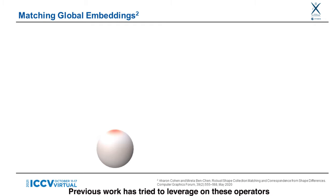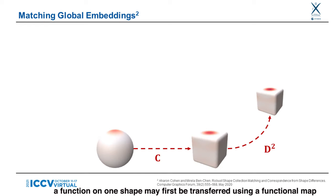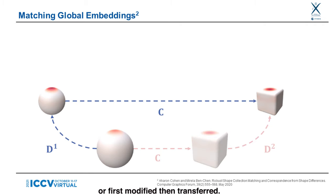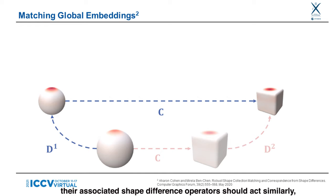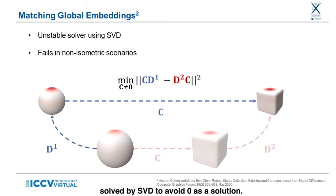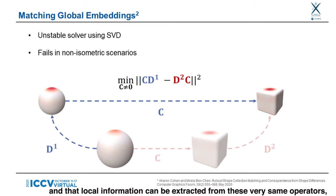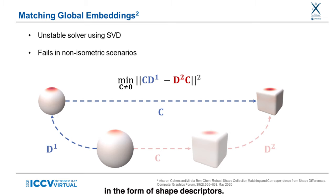Previous work has tried to leverage these operators in order to compute correspondences between surfaces undergoing similar deformations. The idea is as follows: a function on one shape may first be transferred using a functional map and then modified by a shape difference operator, or first modified and then transferred. Given that the two deformations are similar, the associated shape difference operators should act similarly, which leads to a system solved by SVD to avoid zero as a solution. In practice, this solver appears to be quite unstable and fails in the presence of partiality. We argue that using only global embeddings of the deformations is too restrictive, and that local information can be extracted from these very same operators in the form of shape descriptors.